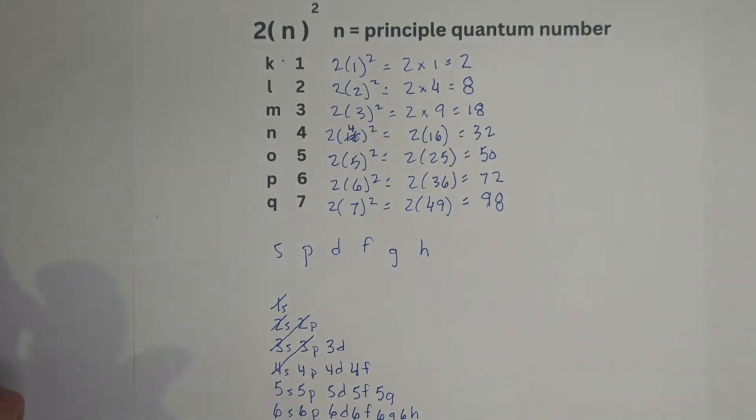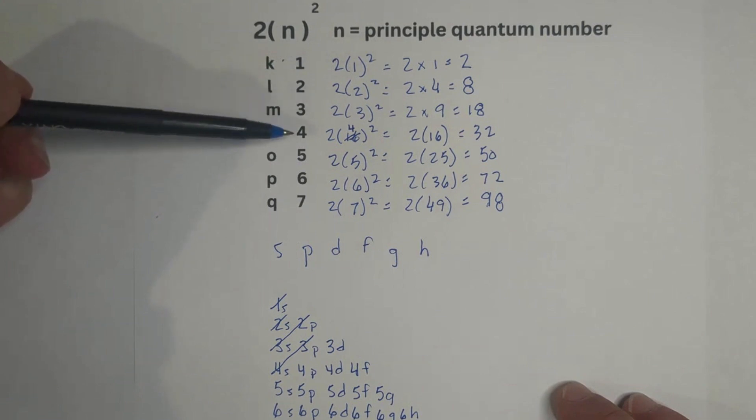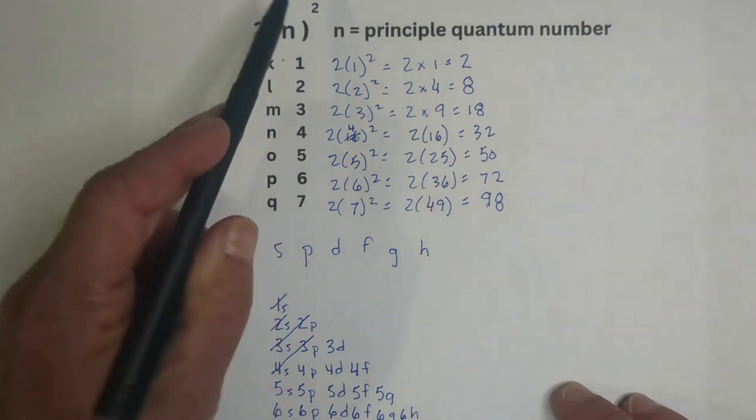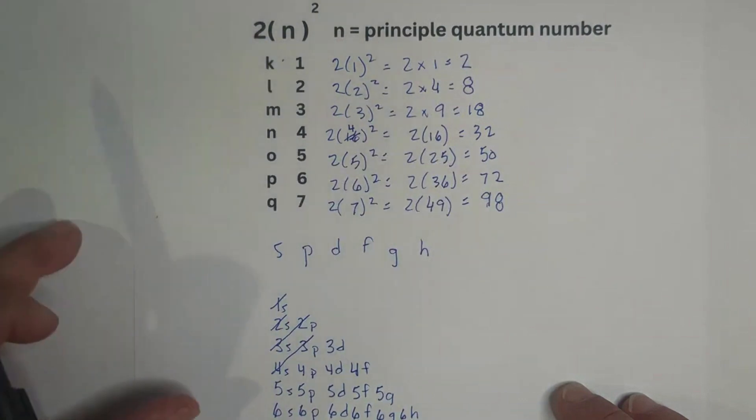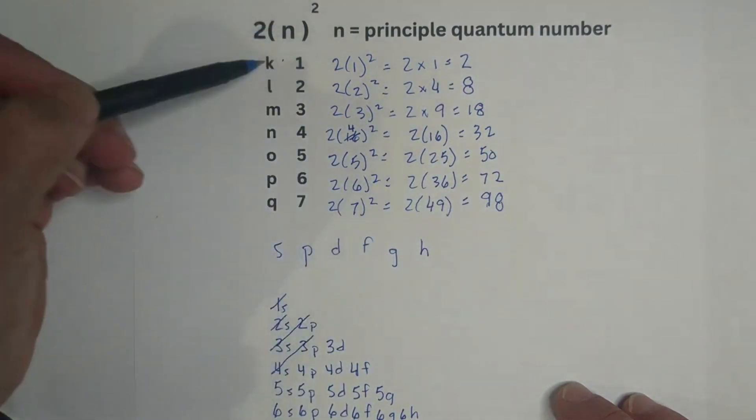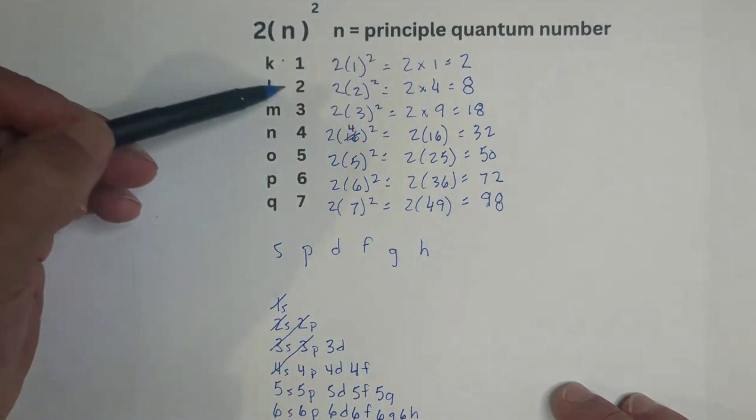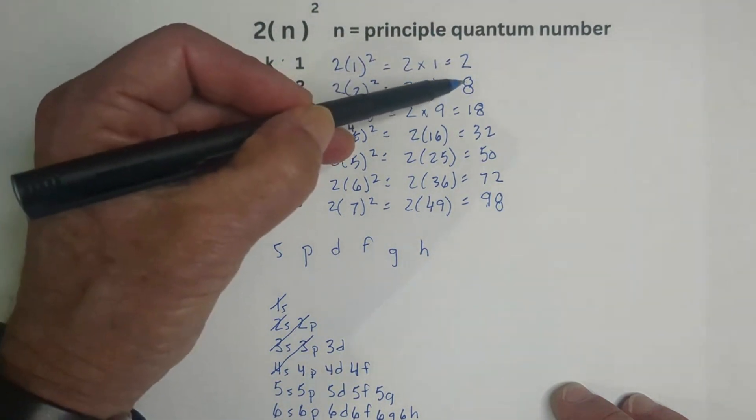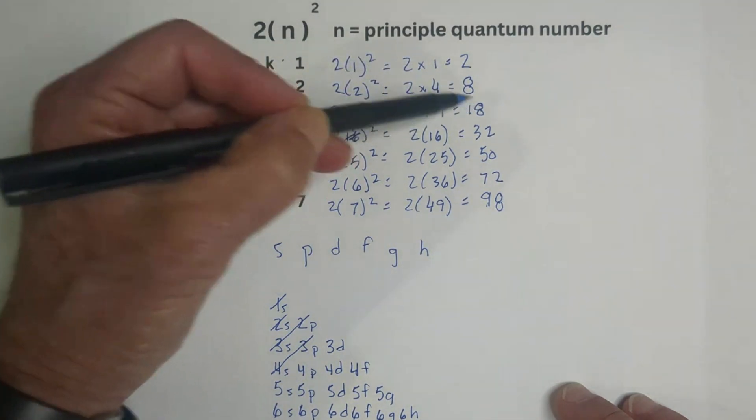Now let's take a look at two ways that you can figure out how many electrons each energy shell can hold. The first, you can use the formula two times n squared, and n is the principal quantum number, or if you'd like, it's just the shell number. So I've worked out each of these. In the first example, we have two times one squared, which is two times one, which is equal to two. In the second one, two squared is four. Two times four is eight. Then the third one, three squared is nine. Two times nine is 18.